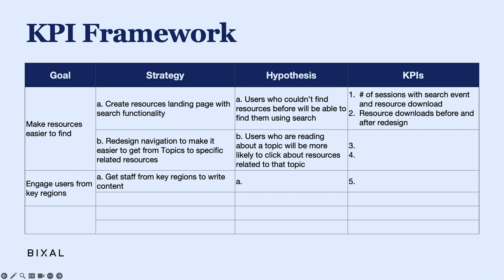Now I want some audience participation. I came up with a second strategy and hypothesis, but I'd like you all to come up with a couple of KPIs. You can talk to people around you. Our second strategy is to redesign the navigation to make it easier for users to get from topic pages to specific related resources. My hypothesis is that users reading about a topic will be more likely to click on resources related to that topic. So what data should we collect to figure out if this hypothesis is true? Take a minute or two, talk to your neighbor, then let me know.